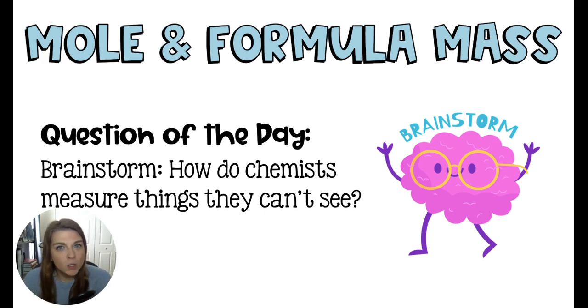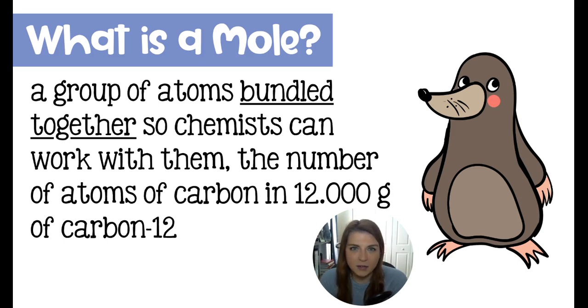The very first lesson is on moles and formula mass, and the question of the day is how do chemists measure things that they can't see? Atoms and molecules are too small to be handled individually, so how on earth do chemists actually do this? A mole is a bundle of atoms. Scientists have determined that we're going to collect atoms into bundles we call moles. When you have a bundle of atoms, they're a lot easier to handle. We've decided on the size of a mole by using carbon as our reference. The number of atoms present in exactly 12 grams of carbon-12 is the quantity that is a mole.